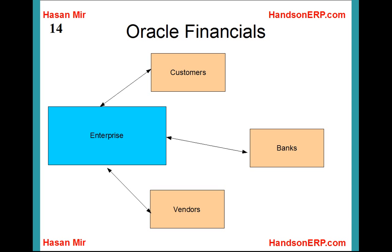A typical company would have vendors, customers, and it would deal with banks, requiring software to manage all these external entities. There is a module in Oracle Financials that caters to each of these needs. To manage customers, a module called Accounts Receivable — now known as Oracle Receivables — is used. To manage vendors, Accounts Payable — or Oracle Payables — is used. Cash Management, or Oracle Cash Management, is used to manage your banks.